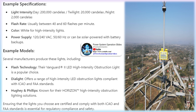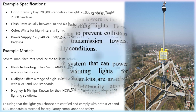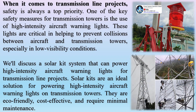Type C medium-intensity aviation obstruction light is a red constant light with an effective light intensity of 2,000 candelas ±25%. The high-intensity A-type obstruction lighting is a white flash with variable intensity during the day, dusk or dawn, and night: 200,000 candelas ±25% in daytime, 20,000 candelas ±25% at dusk or dawn, and 2,000 candelas ±25% at night. It is mainly used for buildings and facilities over 150 meters, or in conjunction with medium-intensity obstruction lights.